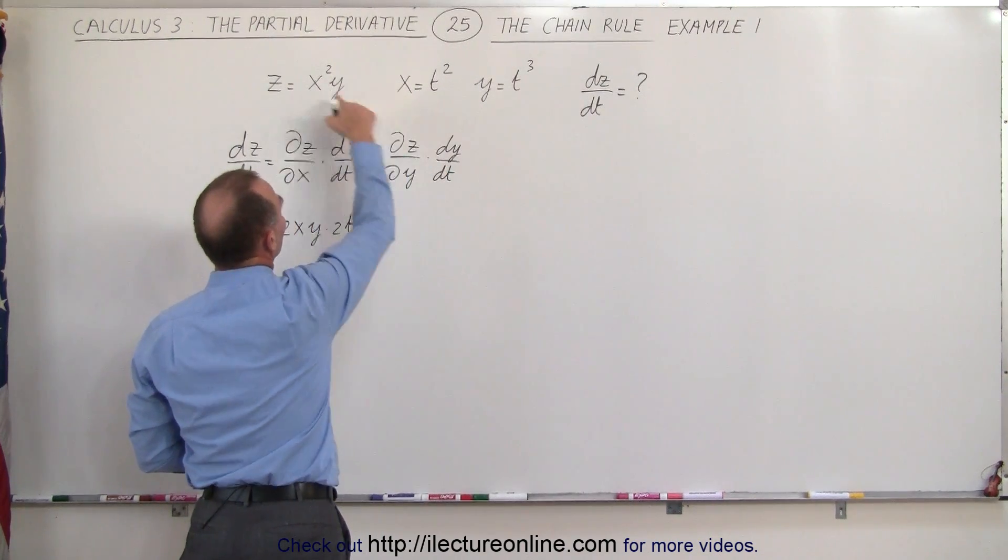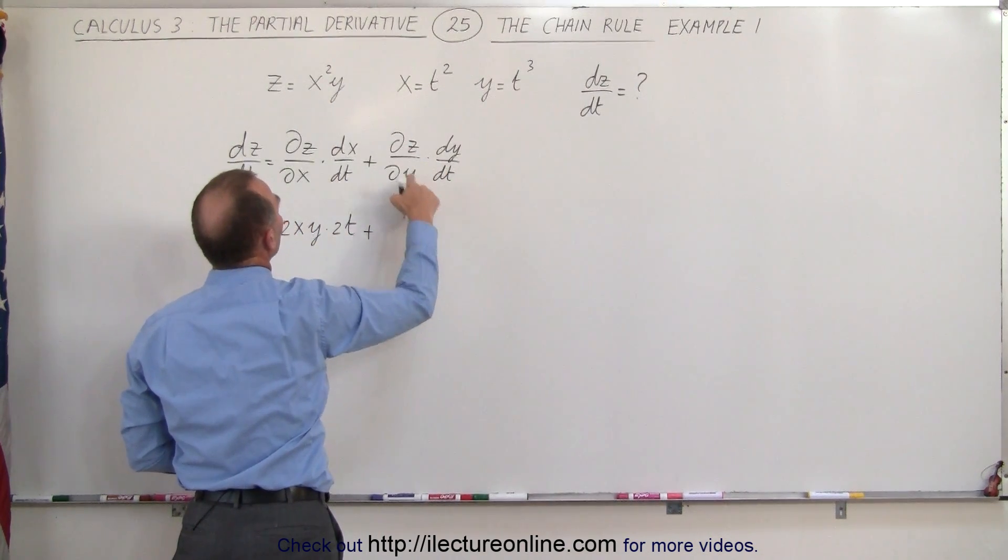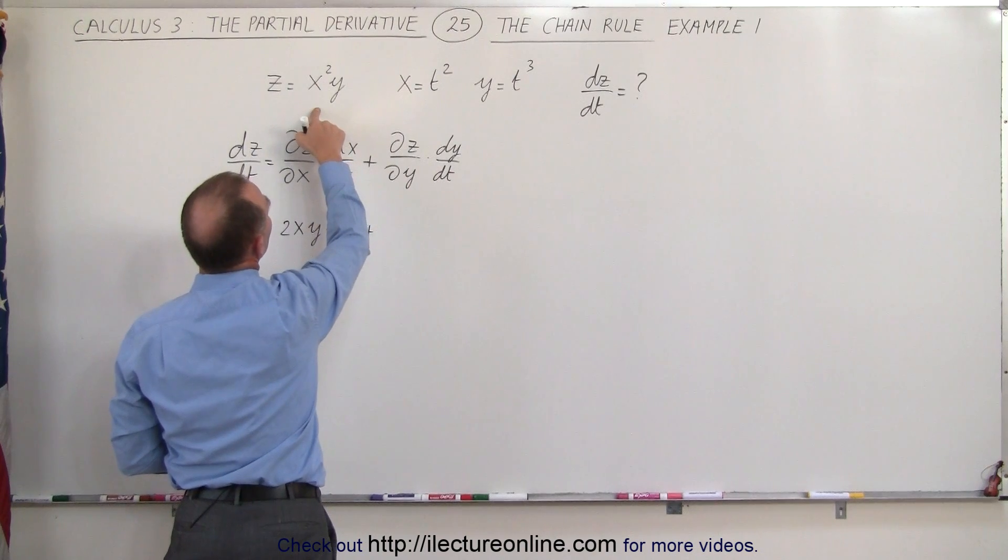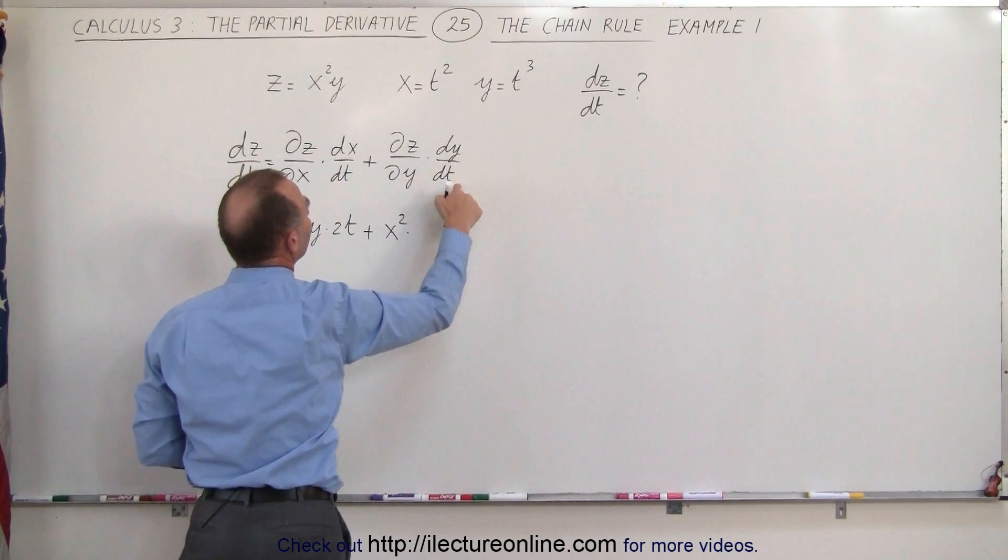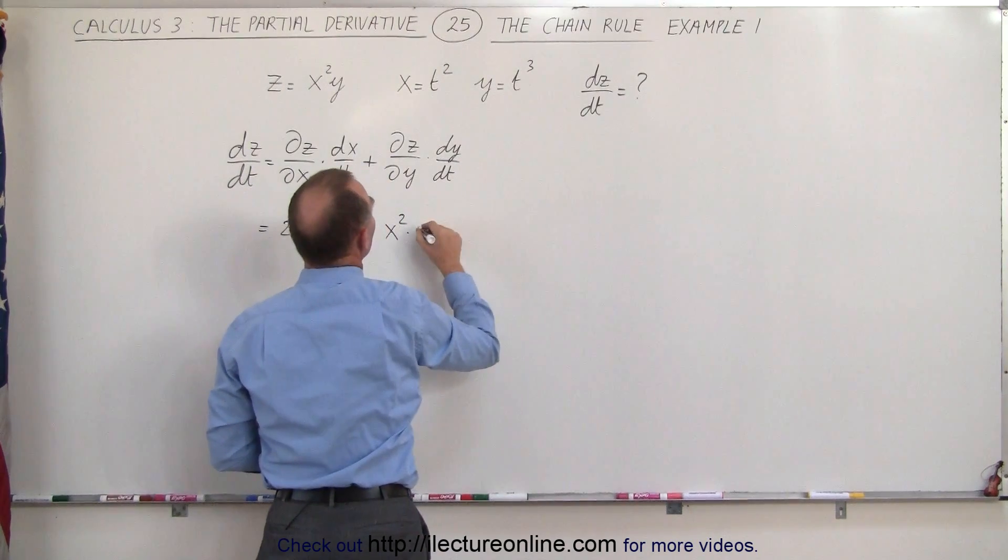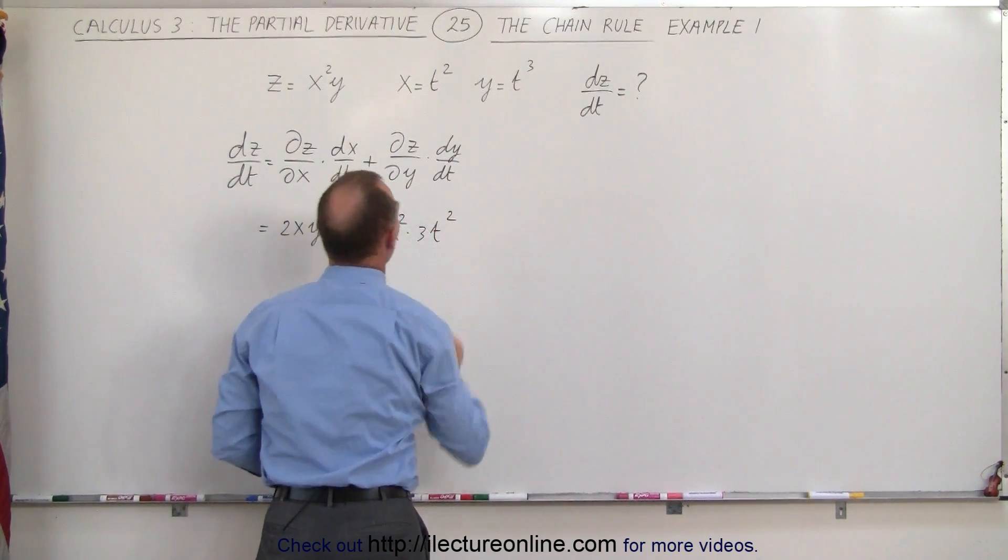Then we add to that the partial of the function with respect to y. The partial of z with respect to y is going to be x squared times the dy dt. Since y is t cubed, that would be 3t squared.